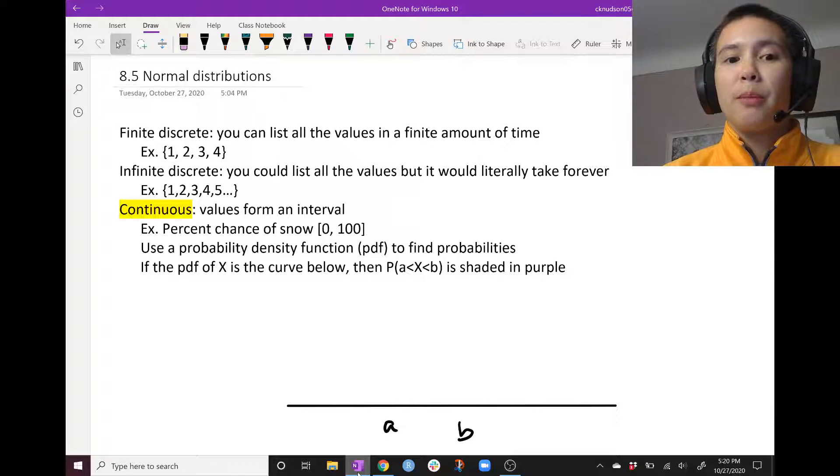So for example, the percent chance of snow, that's anywhere between 0 and 100. So to calculate the probabilities associated with a continuous random variable, we use something called a PDF or a probability density function.